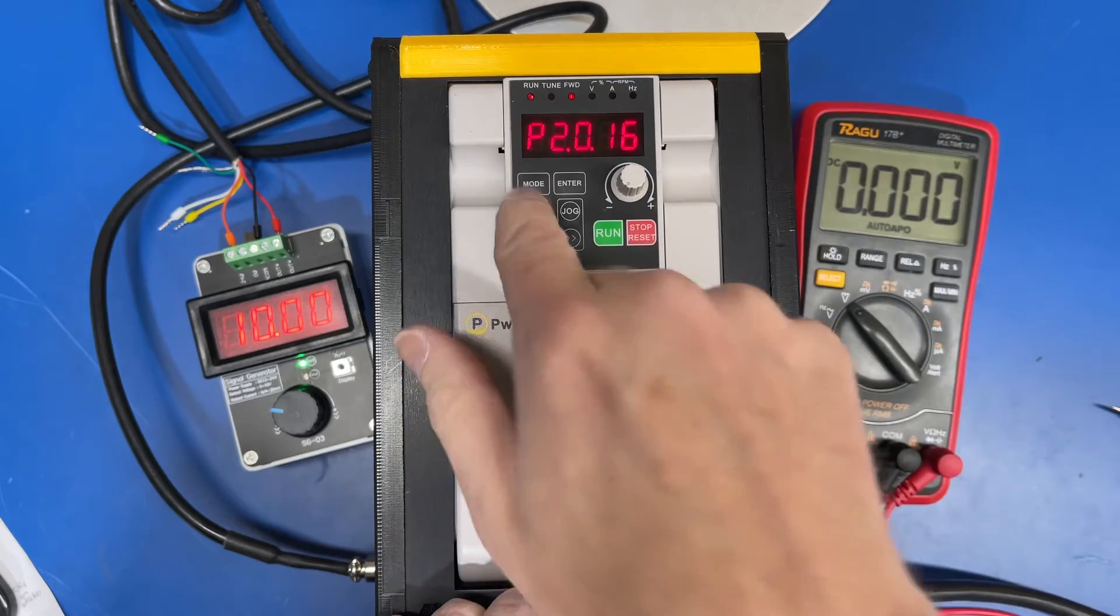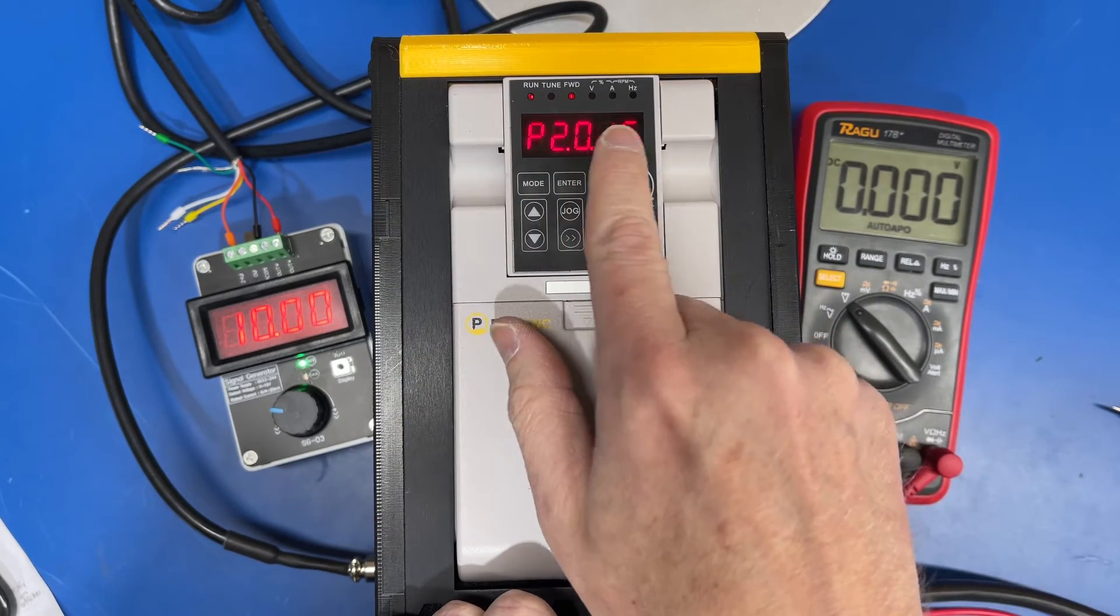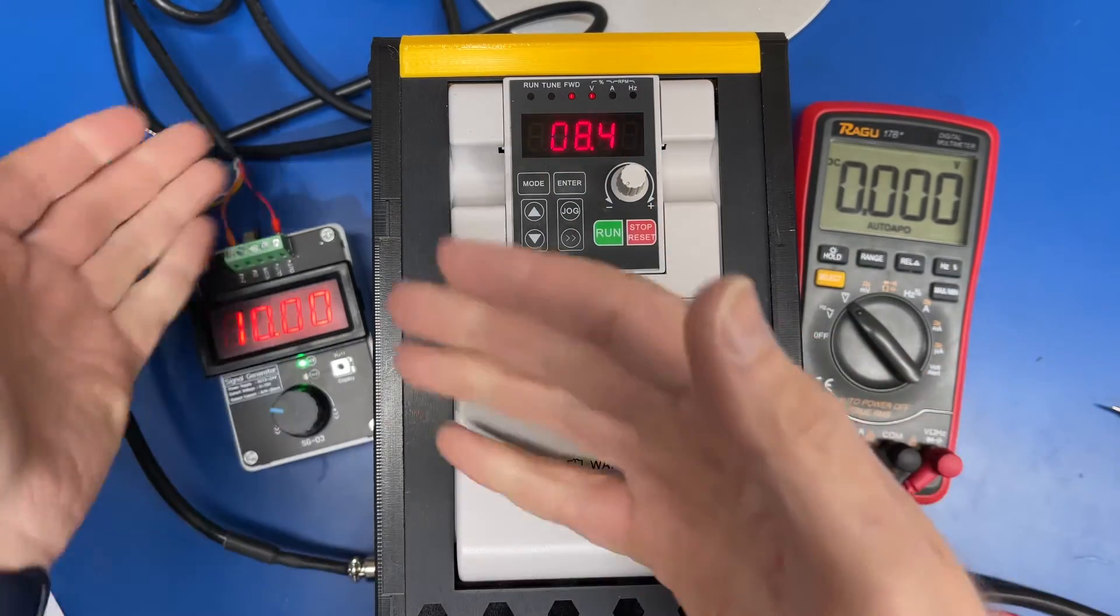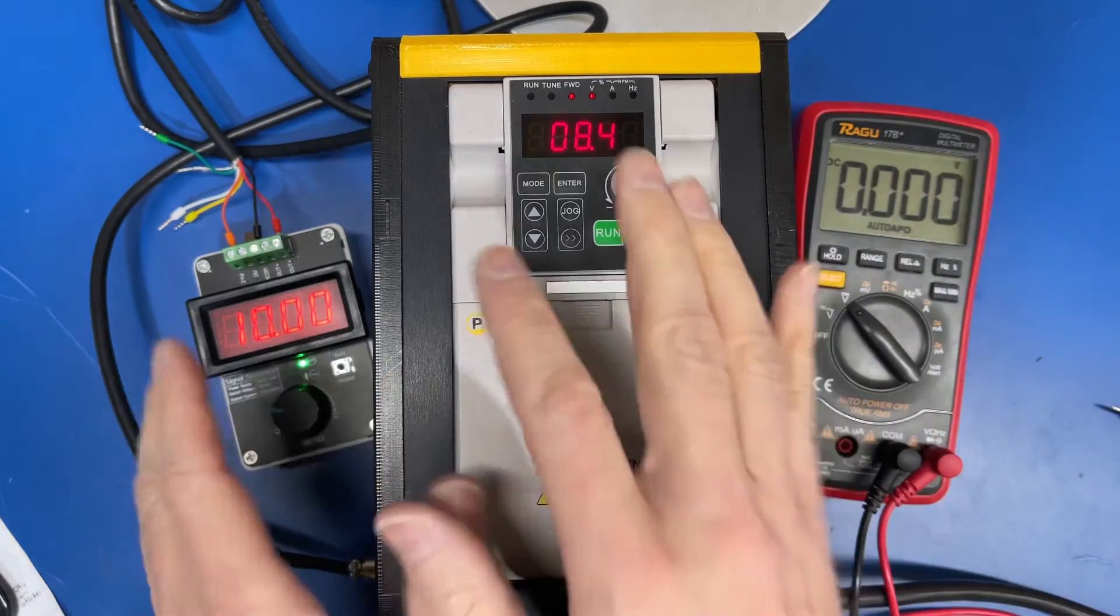Now, again, you can control that based on this P2015. Enter that, and that will show you the maximum voltage if you've read it off from your spindle motor, or off from your CNC controller.